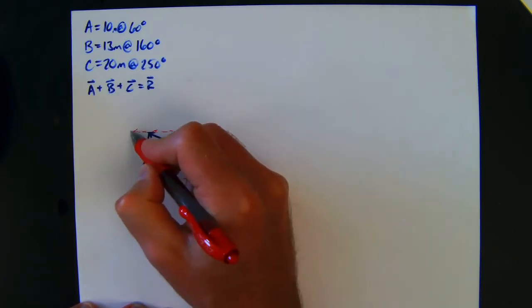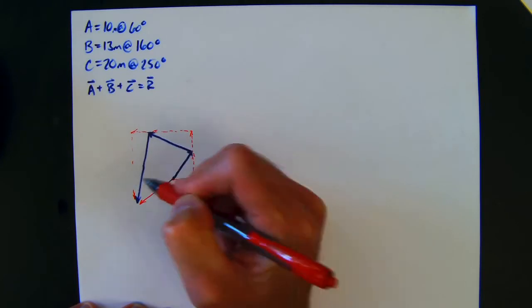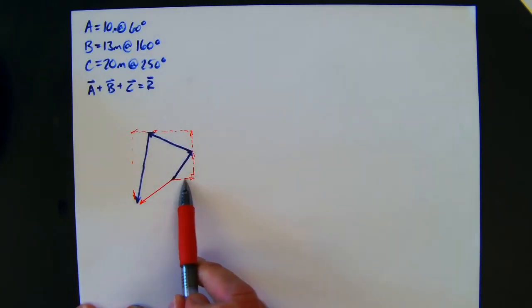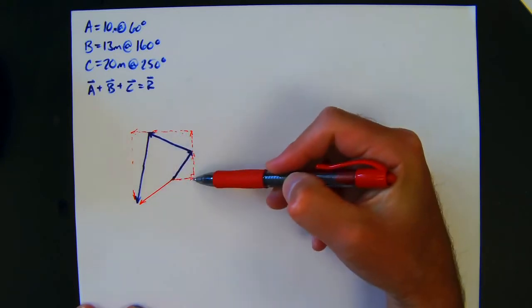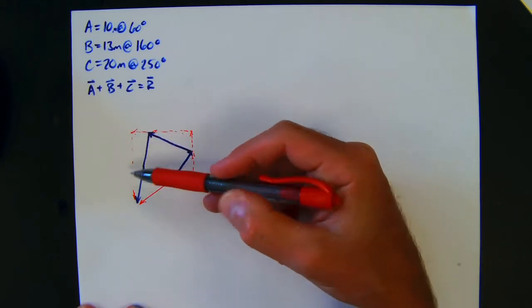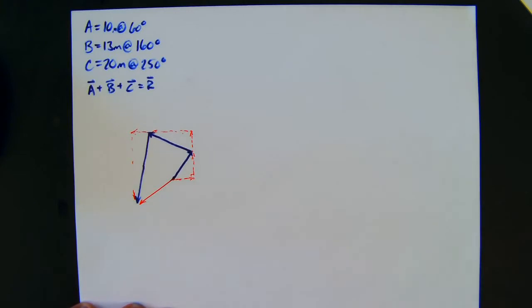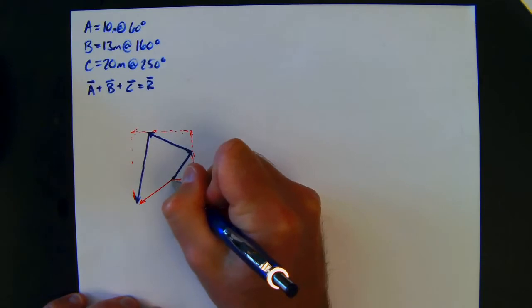And then those vectors, because they are all in the x direction, I can add those or subtract them. Because these are all in the y direction, I can add or subtract them, and what those will do is they will give me a total vector that is going to be the total y and the total x.